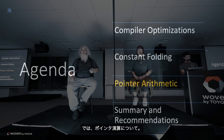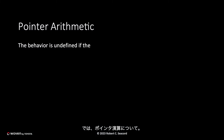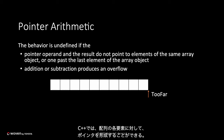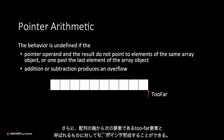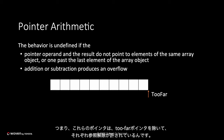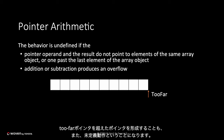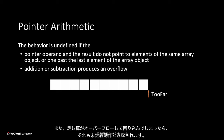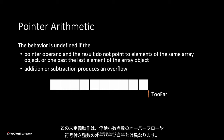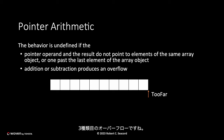Now, pointer arithmetic. In C++ you can form a pointer to each element of an array, and additionally you can form a pointer to the one-past-the-end element. You're allowed to dereference each of those pointers except for the one-past-the-end pointer — dereferencing that results in undefined behavior. Forming a pointer beyond the one-past-the-end pointer is also undefined behavior. If the addition overflows and wraps around, that's also undefined behavior, and this particular undefined behavior is different from floating point overflow or signed integer overflow — it's a third kind of overflow.